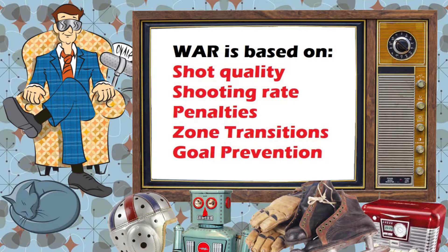Finally, giving the goalie some love — their WAR depends on the reverse of what I mentioned previously. The severity of a goal allowed to WAR is a product of total prior shots faced, the quality of the shot, and whether that shot was taken at even strength or on the power play.